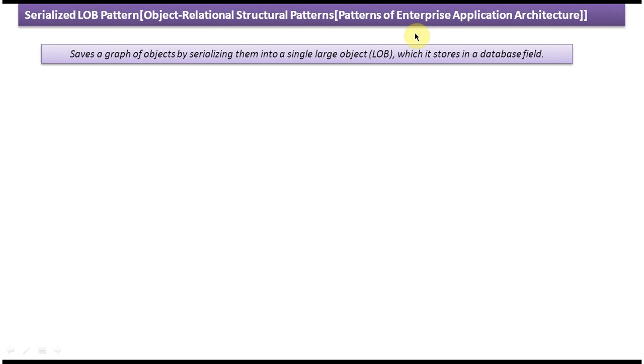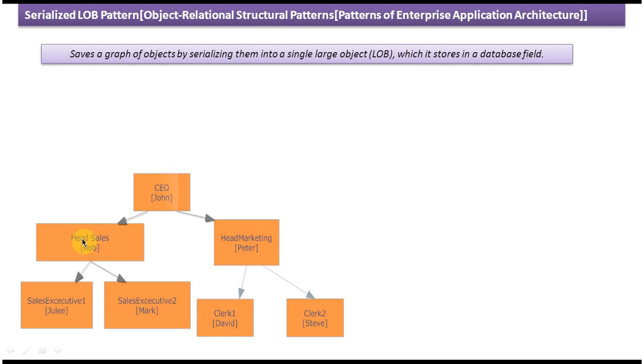We will see one example so that you will understand this sentence. Here you can see the tree structure of organization. Under CEO John, there are two persons working: Rob and Peter.